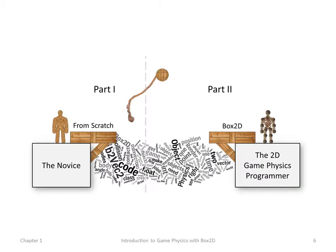We'll start out at the novice end, coding some game physics from scratch, just so you can see the major problems that come up and some of the techniques used to overcome them. On the right, we'll show how to use Box2D to code your game physics. The left is part one of the book, the right is part two. The missing stuff in the middle — we're going to skip over that, using, if you like, a swing rope to swing from one side to the other without getting into the details of how Box2D was coded.